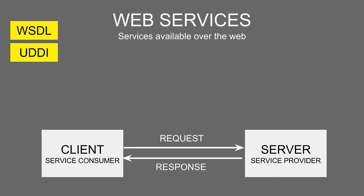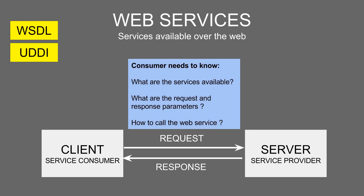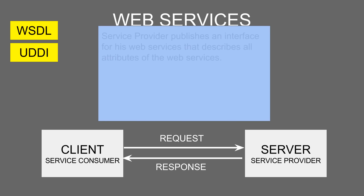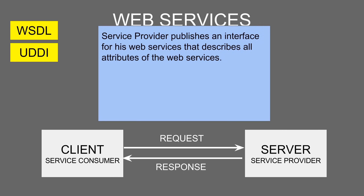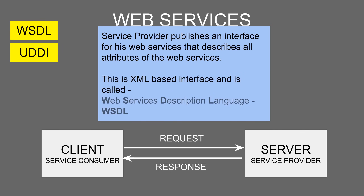If you are a service consumer and you want to use a web service, you need to know all the details about it — what the web service is, what are the various components and functionalities, what are the parameters, the return types, and how exactly to consume the web service. To enable this, every service provider publishes a description about his web service, which is an interface describing all the attributes and functionalities. This is an XML-based interface called WSDL, or Web Services Description Language.